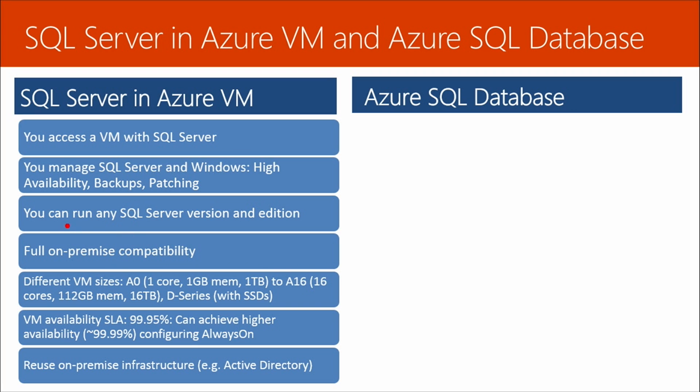With IaaS, you can run any SQL Server version, you have full on-premise compatibility, and you can connect back to on-premises. You can choose different VM sizes, and with availability sets you can get your SLA. You can also configure SQL Always-On, which is a built-in option that does it automatically. Always-On clustering is the failover clustering technology in SQL Server and it's one of the few workloads where you can run an actual Windows cluster inside Azure. On-premises it can be tricky, but in Azure it's much easier — just an option you select. Additionally, with the Azure VM you can reuse your existing on-premises Active Directory infrastructure.